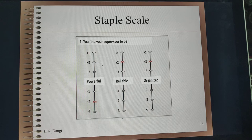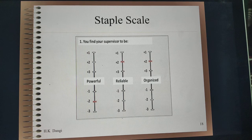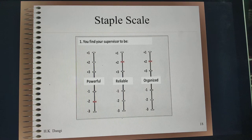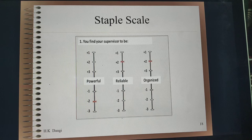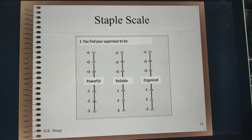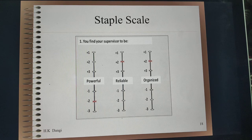Another format is the staple scale, wherein rather than giving two different words, you give only one adjective and ask your respondent to rate it. For example, 'you find your supervisor to be powerful' and the degree of agreement or disagreement varies: plus one, plus two, plus three, minus one, minus two, minus three. Similarly for 'reliable.' It is generally placed vertically.